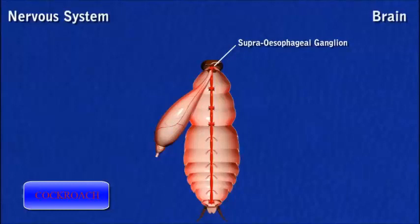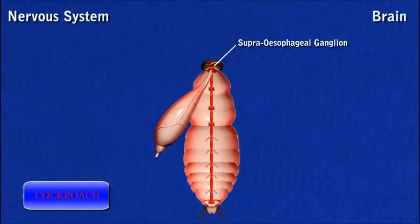The remaining three pairs of ganglia of the head fuse to form the sub-oesophageal ganglion, which lies below the oesophagus. The brain and sub-oesophageal ganglion are connected together on either side of the oesophagus by a circumpharyngeal commissure.